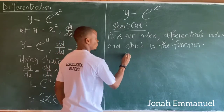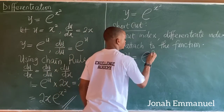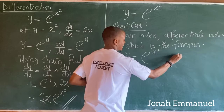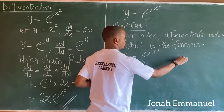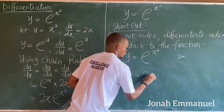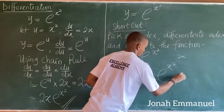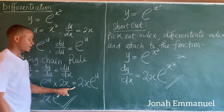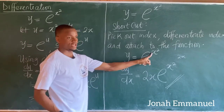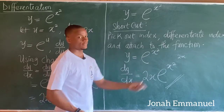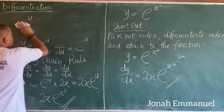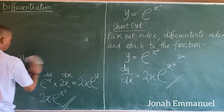If I'm given y equal to exponential x squared, my index here is x squared. If I differentiate x squared, I get 2x. So simply attach this to the function. I'll have that dy over dx is equal to 2x exponential x squared. And that's the same answer I had before — 2x exponential x squared. So it's very simple: pick out the index, differentiate the index, and attach it to the function. That becomes your shortcut to differentiation of exponential functions.